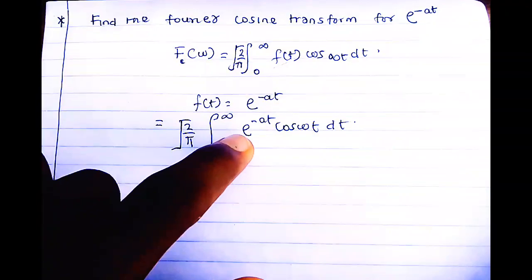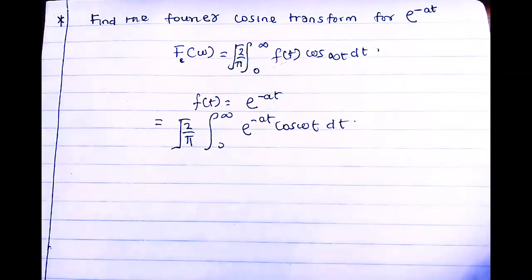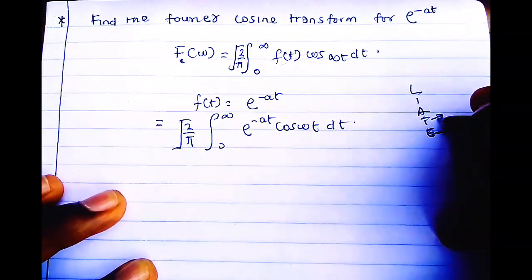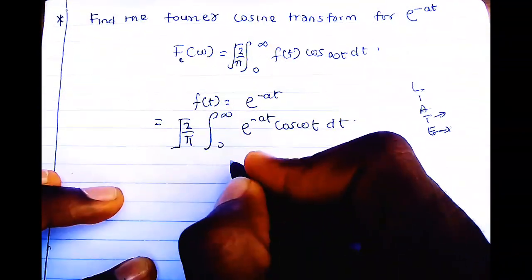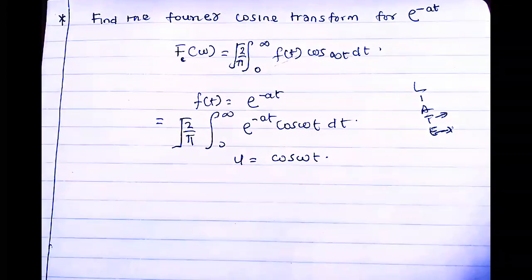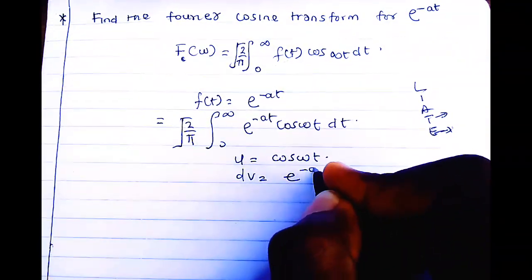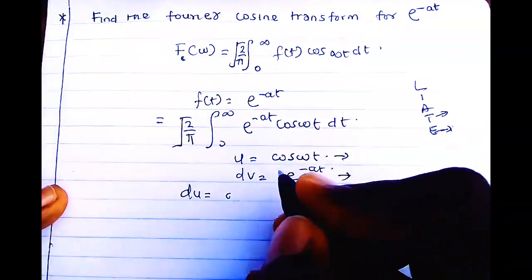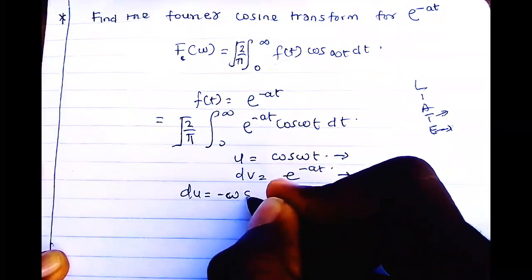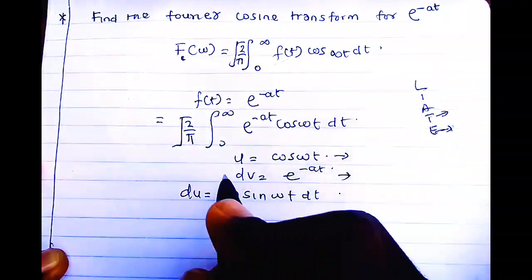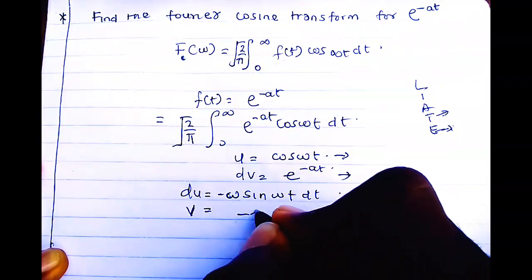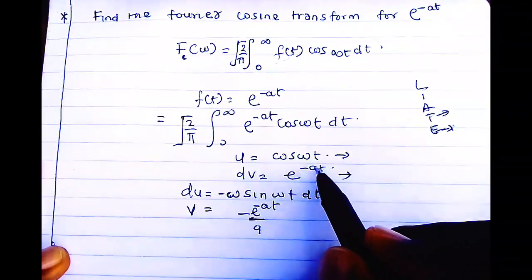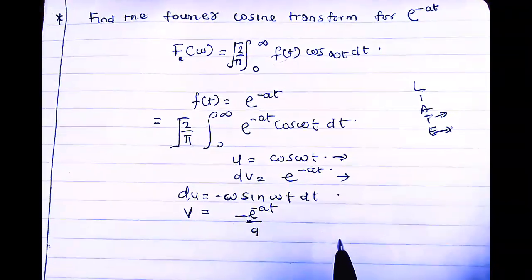We use integration by parts to integrate the product of two functions. Using LIATE — logarithm, inverse, arithmetic, trigonometric, exponential — since trigonometric comes before exponential, we take u = cos(ωt) and dv = e^(-at) dt. Differentiating u gives du = -ω sin(ωt) dt, and integrating dv gives v = -e^(-at) / a.